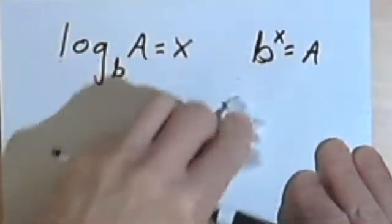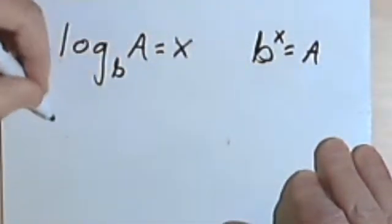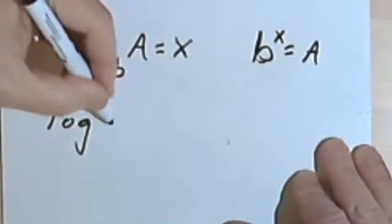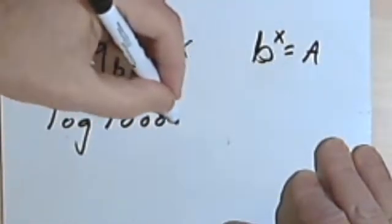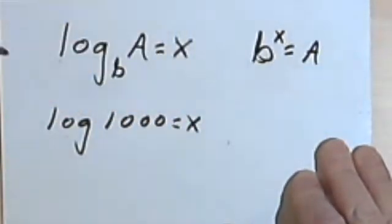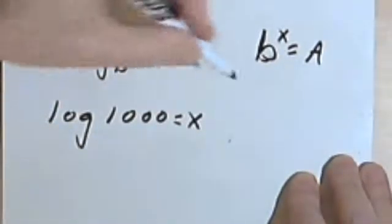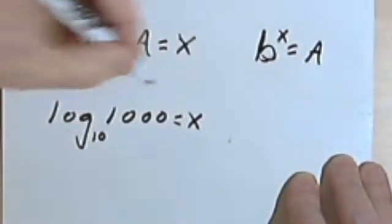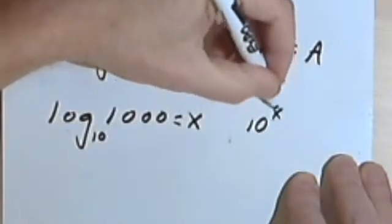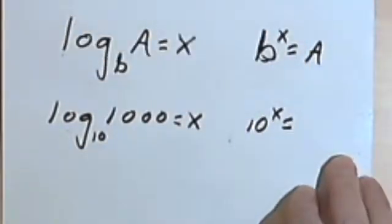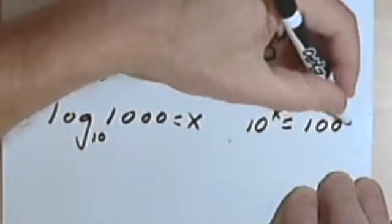Let's do the log of 1,000. The log of 1,000 equals x. Remember, if you don't see a base, the base is 10. So that means I'm going to have 10 to the x power equals 1,000.